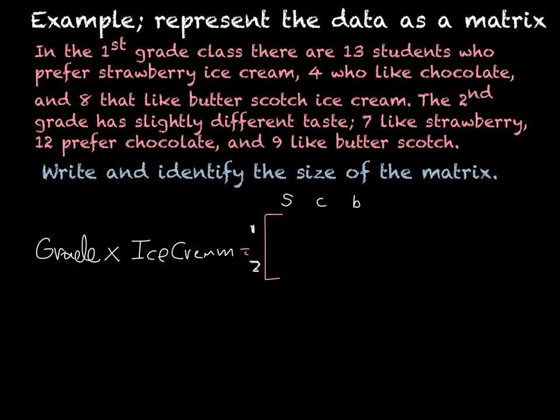Then we're just going to put our numbers in. We don't actually need our variables, we're only going to deal with the numbers. So it looks like 13 like strawberry, 4 like chocolate, and 8 like butterscotch. And then in the second grade it was 7 like strawberry, 12 like chocolate, and 9 like butterscotch.